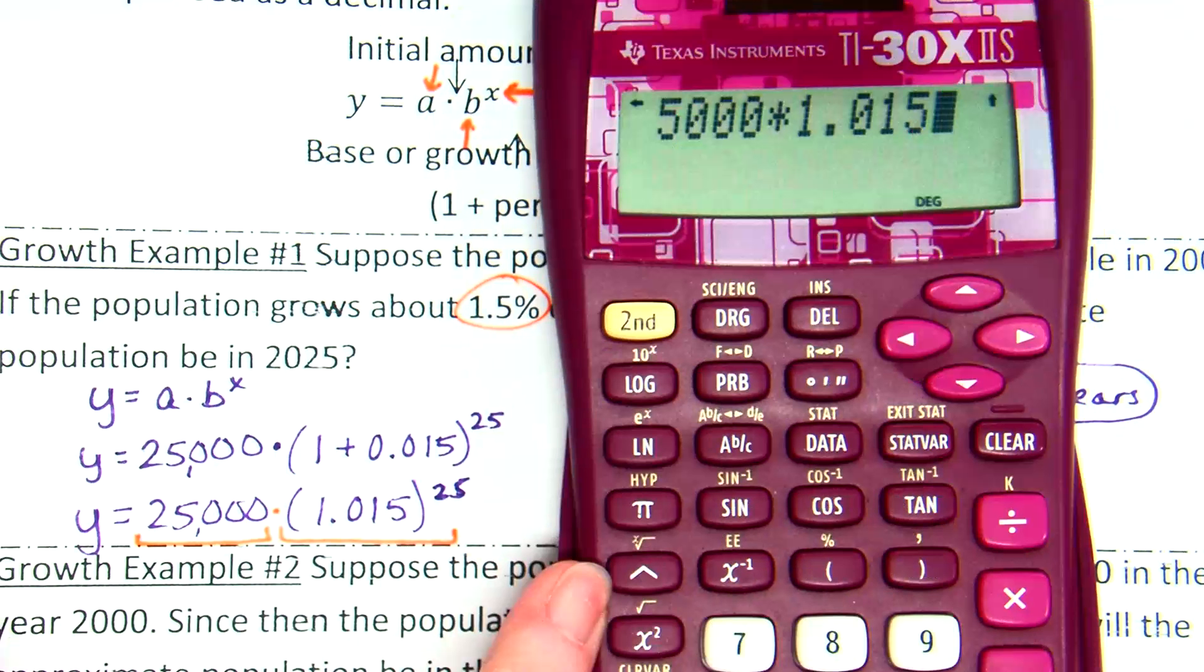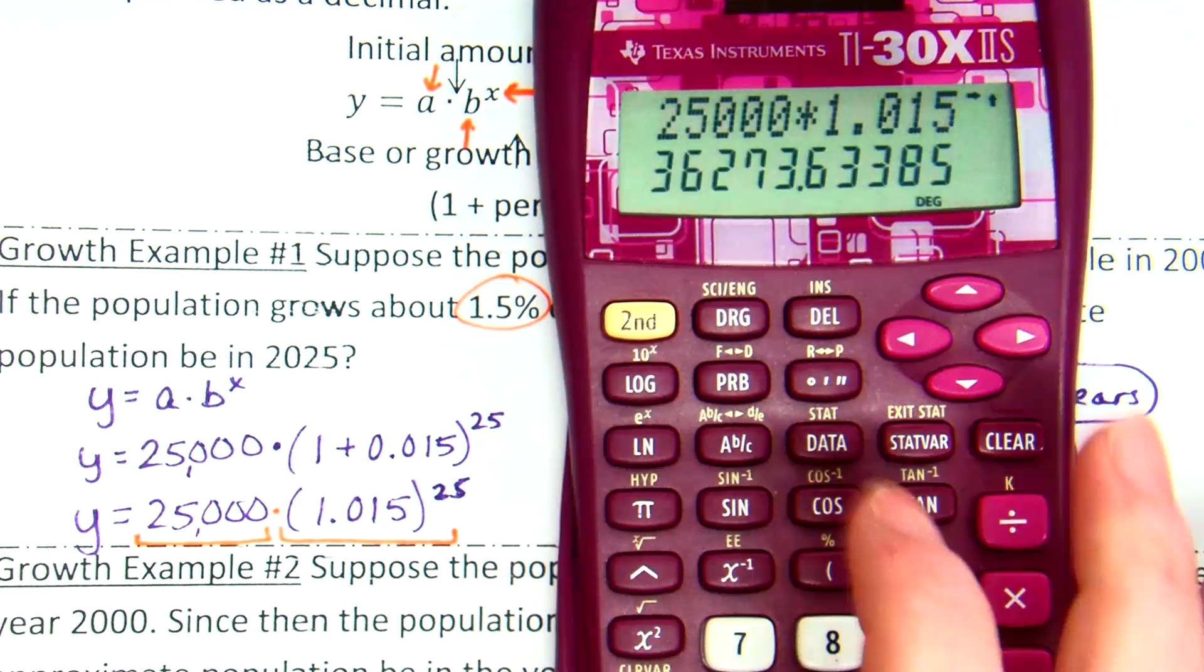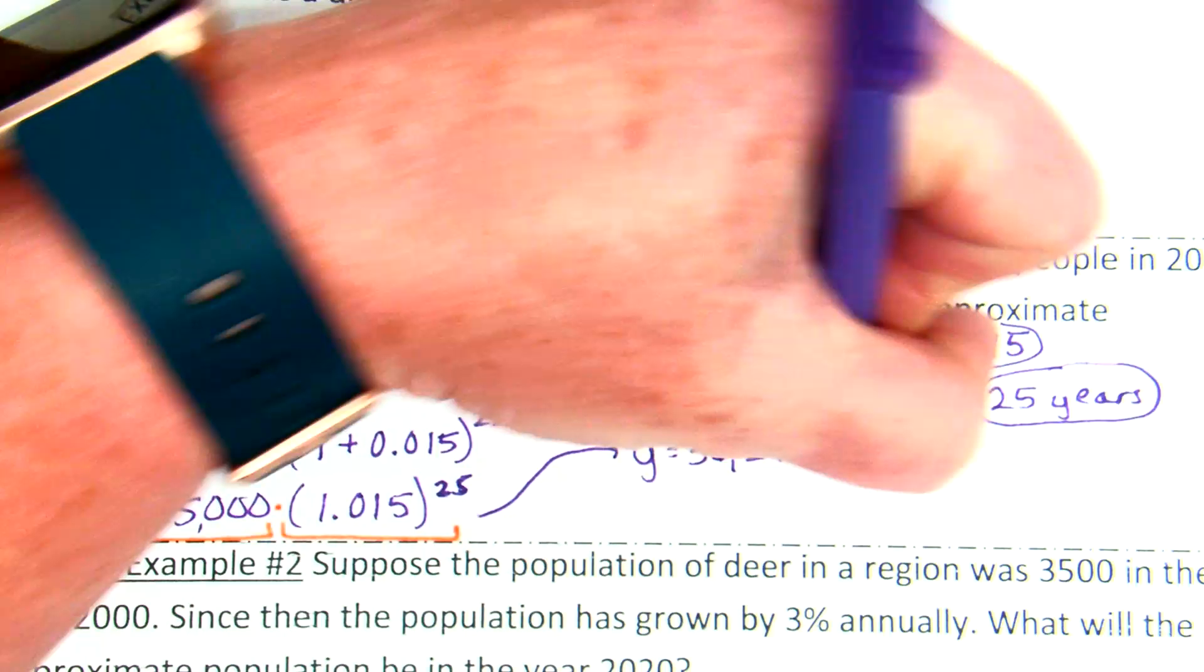You did it right on your calculator if your answer matches my answer. Yep. Okay. So, I put that in the calculator. 36,273.63385. What does this number represent? Amount of people. Amount of people. So, should we give a decimal for the amount of people?